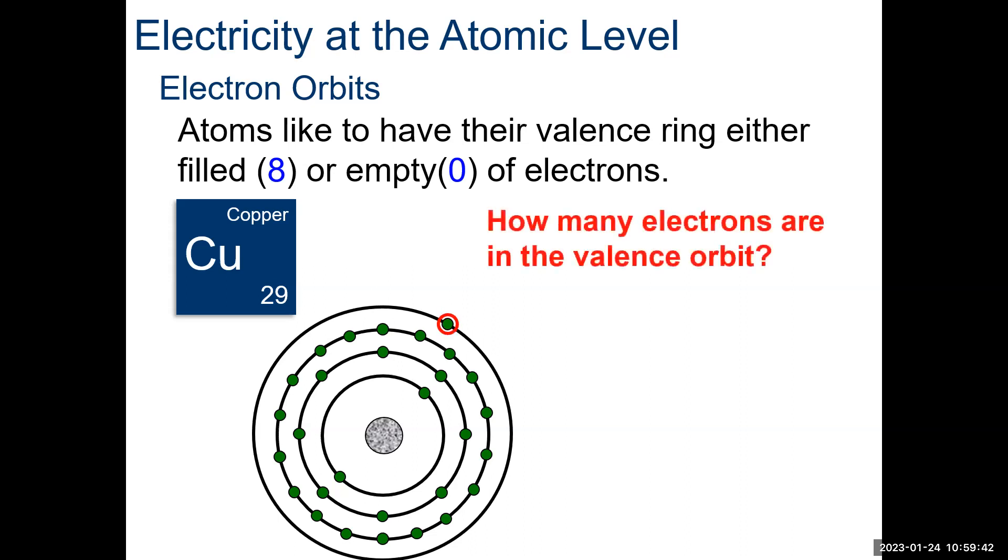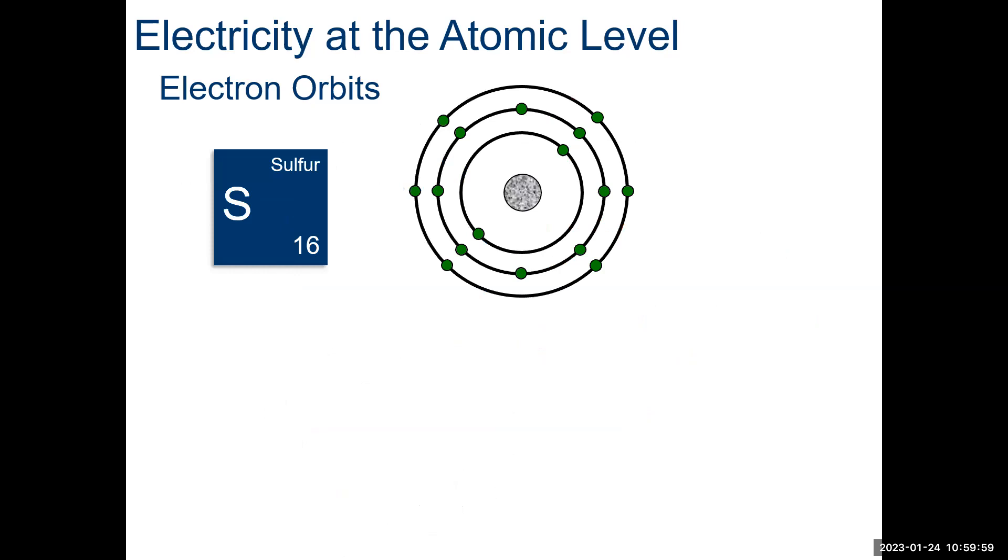So, I guess that was a spoiler alert. Is copper a conductor or insulator? It's definitely a conductor. Why? Well, because there's just one, and it's an unstable valence. That one doesn't know whether to stay or go, and it's very unstable.